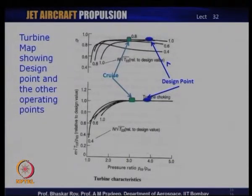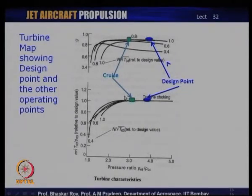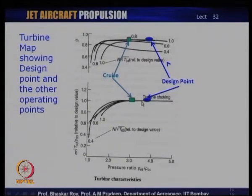The turbine is one of the important components. The design point typically operates at a condition where the turbine is likely to be choked, giving very good efficiency. In modern aircraft design the cruise operation could be far away from the design point, but it is entirely possible that at cruise the turbine could still be choking. This has to be ensured by design because that is where you get the maximum work output from a turbine. It is necessary that by design the cruise operation is also under turbine choked operating condition, ensuring very good turbine efficiency.